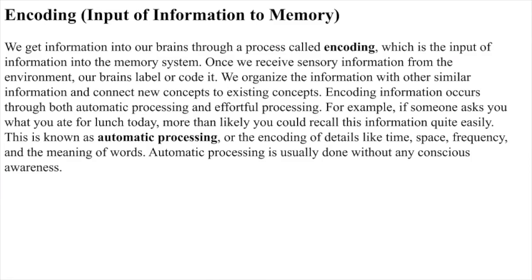Encoding is the input of information to memory. We get information into our brains through a process called encoding, which is the input of information into the memory system. Once we receive sensory information from the environment, our brains label or code it. We organize the information with other similar information and connect new concepts to existing concepts. Encoding information occurs through both automatic processing and effortful processing.